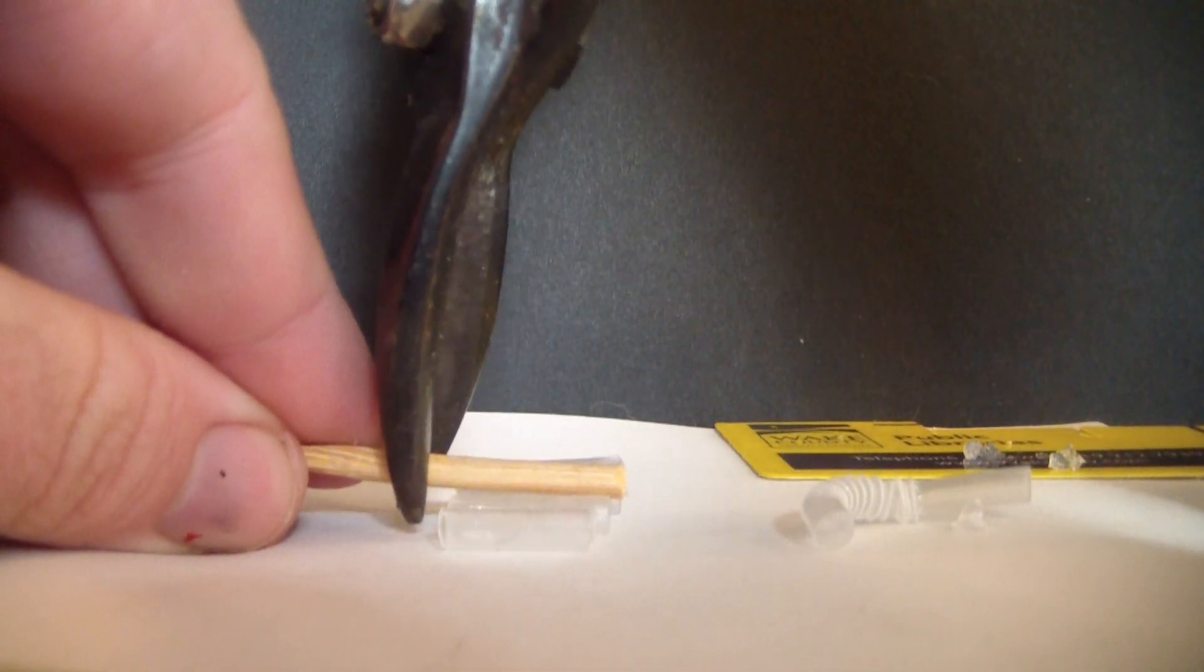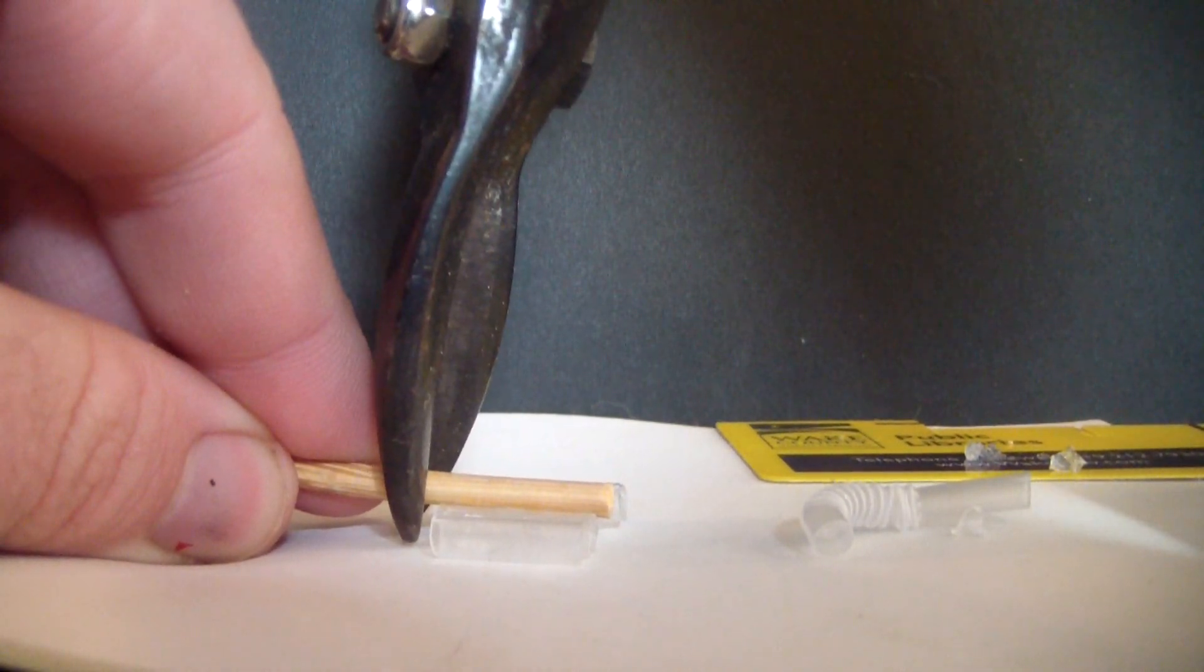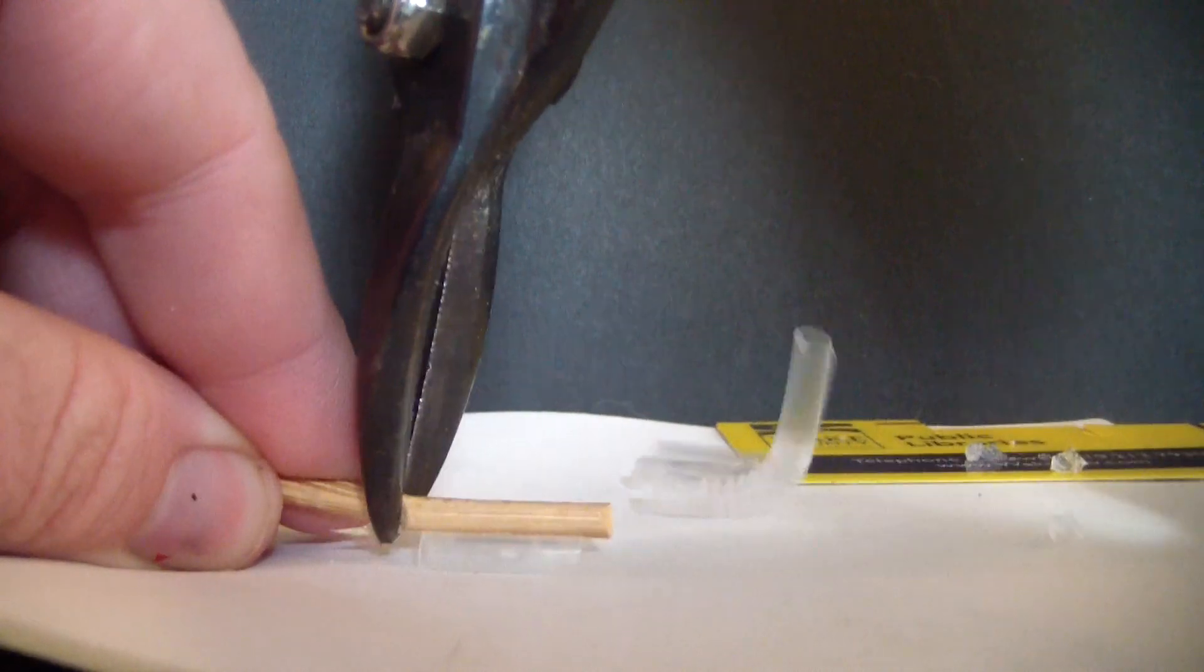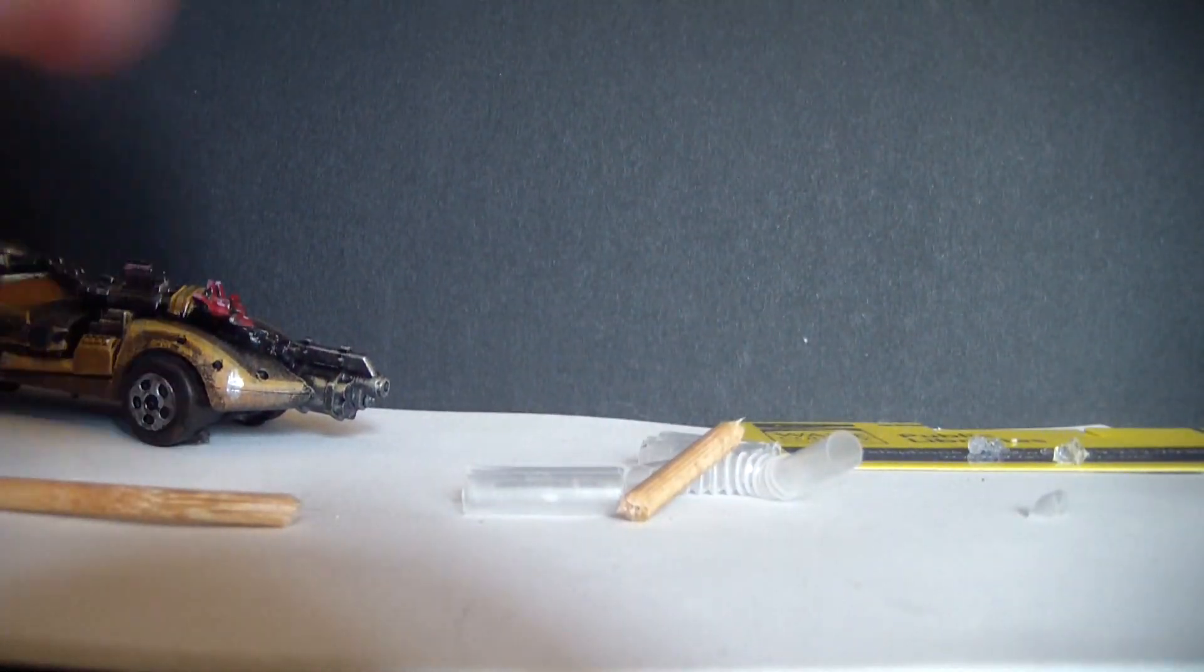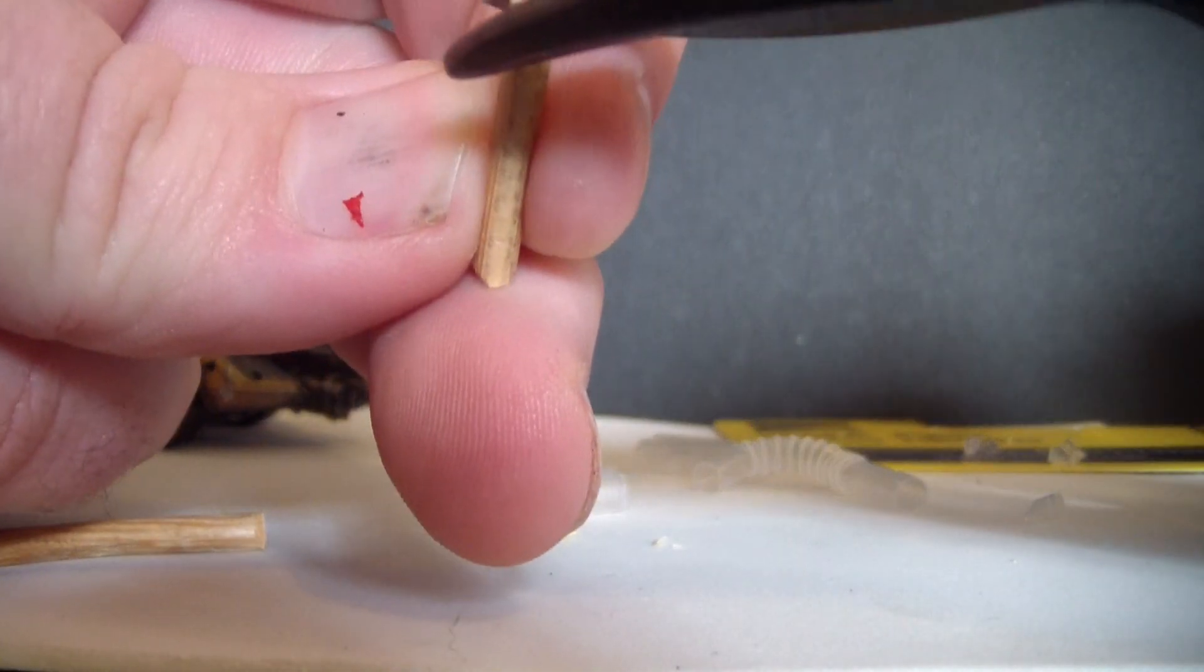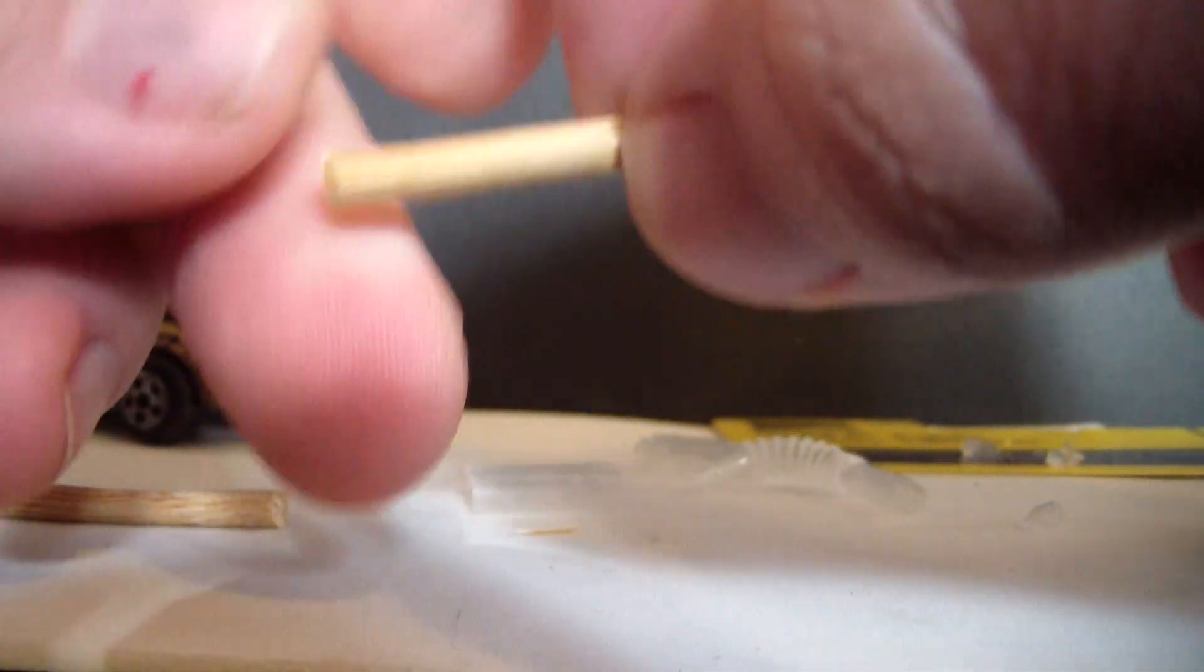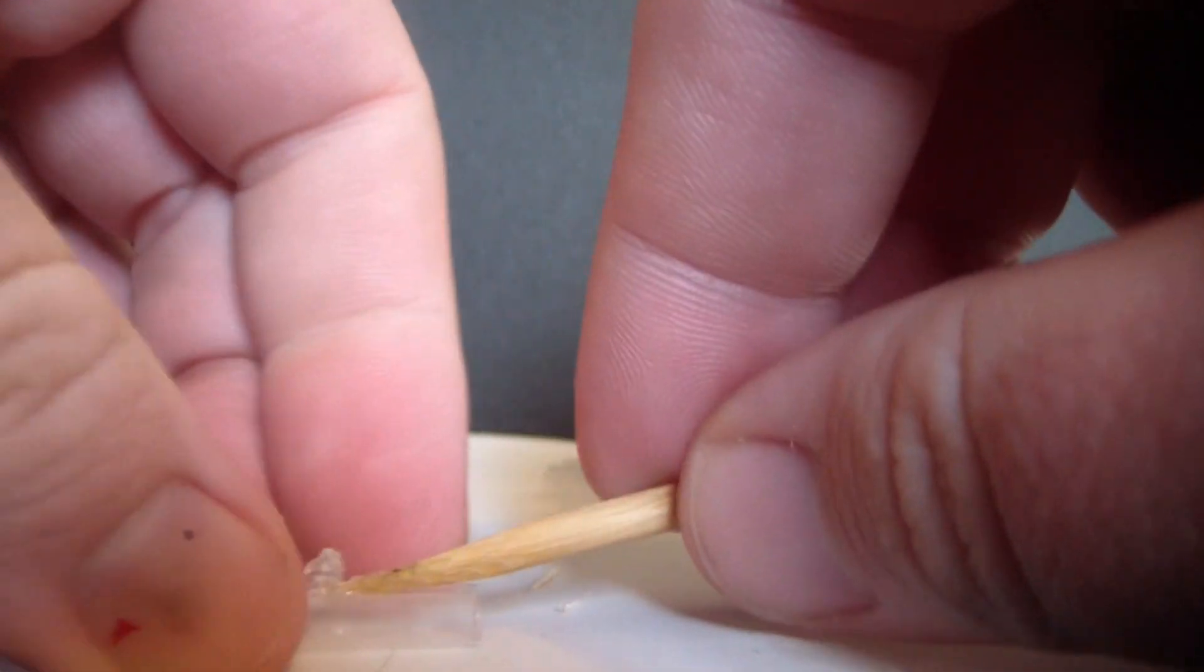Now once they're dry, we're gonna take our barbecue skewer and we're gonna cut it just a little bit longer than the straws. That's gonna be the center of our barrels like in a revolver. You got that central pin that revolving barrels hang on. That's gonna be what our barbecue skewer is doing. We're gonna trim that up so it's nice and round at the ends.